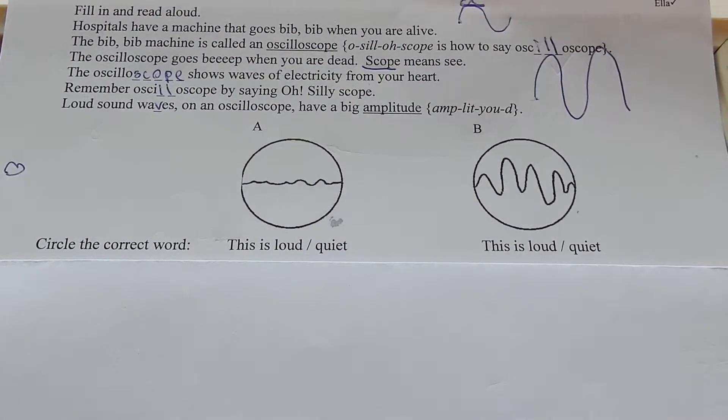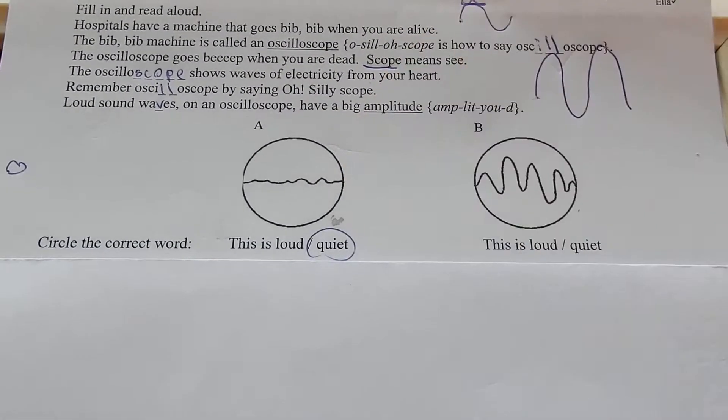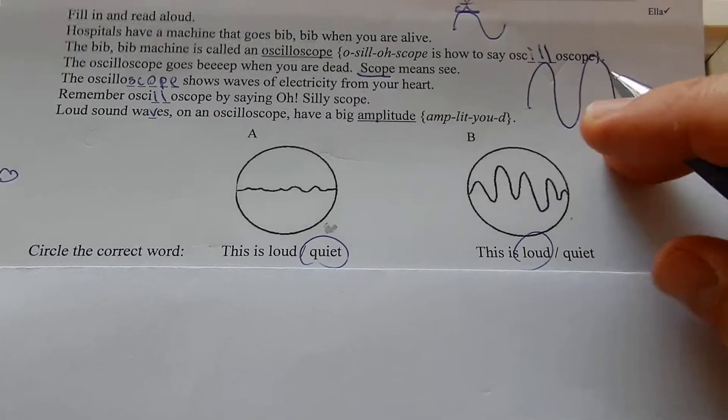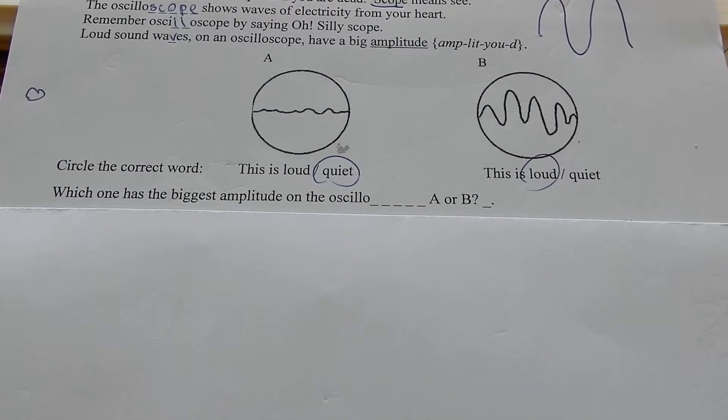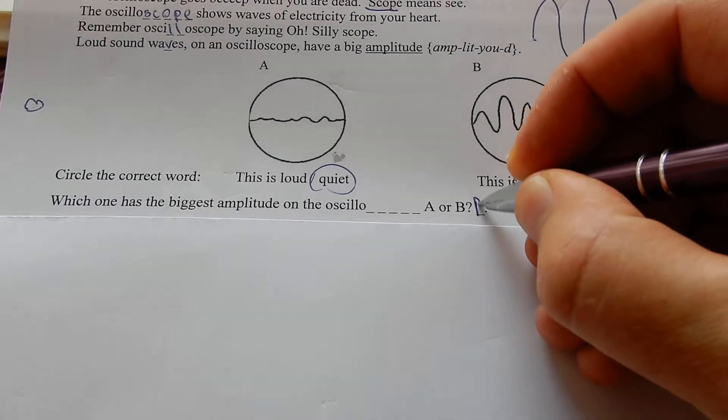Circle the correct word. This is a loud or quiet? That's definitely quiet. This is loud. Which one has the biggest amplitude on the oscilloscope, A or B? B has got the biggest amplitude.